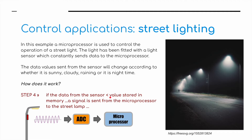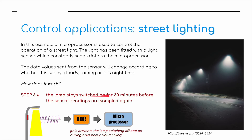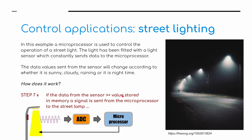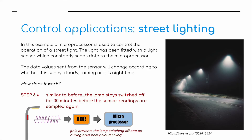In step four, if the data from the sensor is less than the value stored in memory, a signal is sent from the microprocessor to the street lamp and the lamp is switched on. The lamp stays switched on for maybe 30 minutes before the sensor readings are sampled again. This prevents the lamp from switching off and on during brief heavy cloud cover. In step five, if the data from the sensor is greater than or equal to the value stored in memory, a signal is sent from the microprocessor to the street lamp and the light is switched back off again. Similarly, the lamp stays switched off for 30 minutes before sensor readings are sampled again, again preventing switching on and off during brief cloud cover.